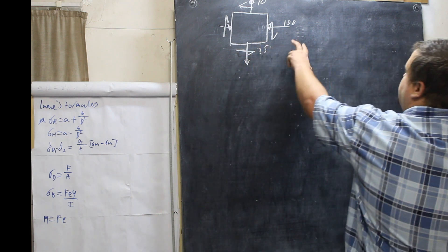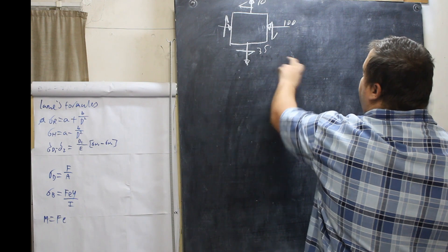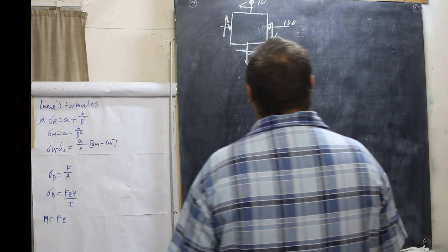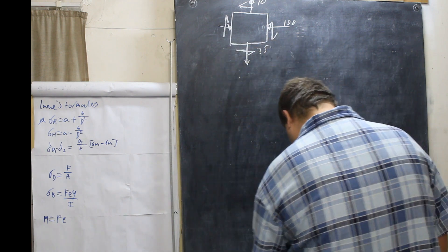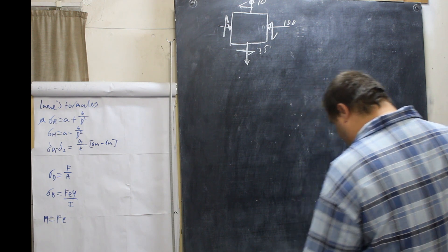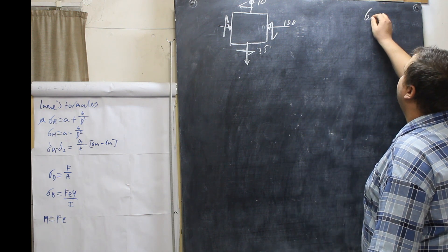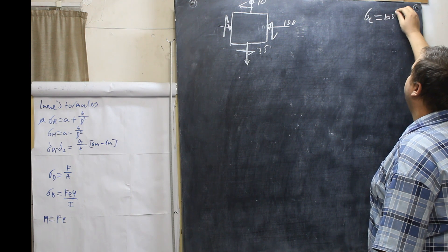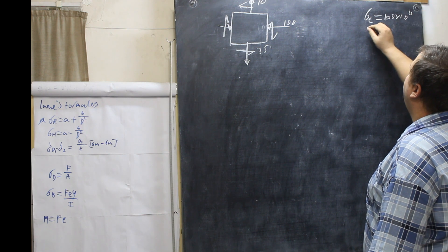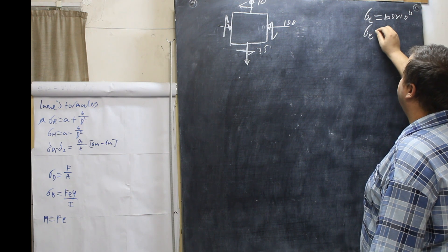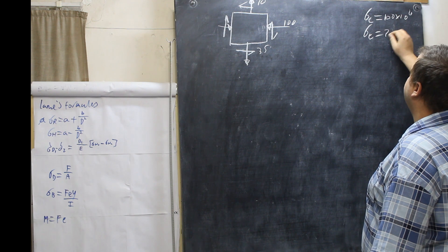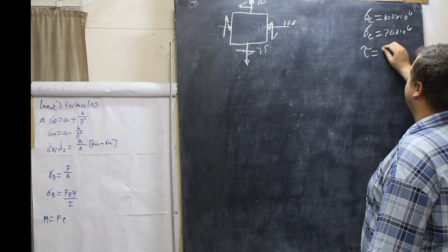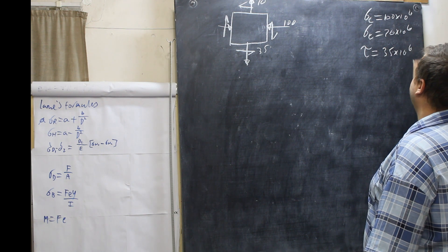So what we need to do now is write our values to the right hand side as always. Compressive stress is 100 times 10 to the 6. Stress tensile is 70 times 10 to the 6, and shear stress is equal to 35 times 10 to the 6.